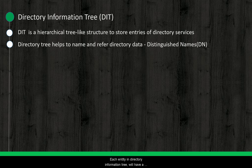Each entity in a directory information tree will have a unique distinguished name, generally referred to as DN. DN will lead you exactly to a particular entity, which makes it easy to refer an entity while working with a directory server.